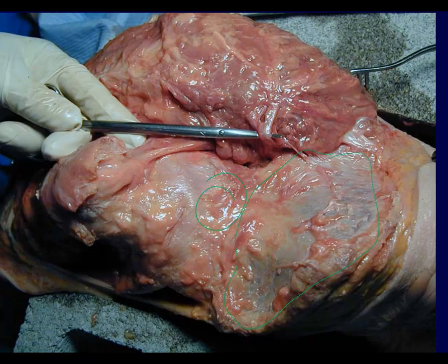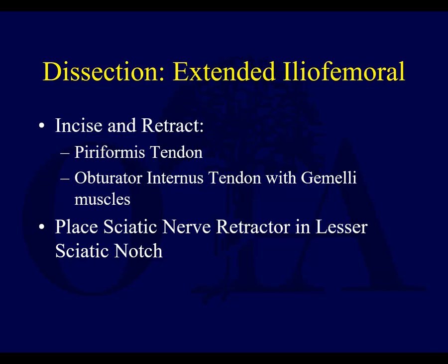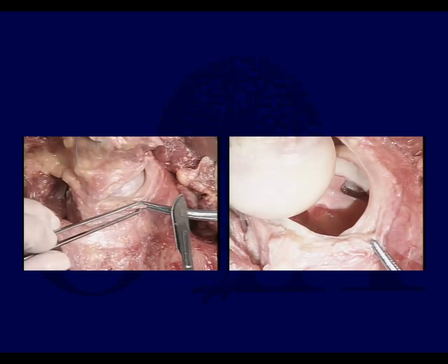You incise and retract the piriformis tendon and the obturator internus tendon with the gemelli muscles — it's almost like you're back doing a posterior approach, like a Kocher-Langenbeck. You put the sciatic nerve retractor in the lesser sciatic notch to protect the sciatic nerve. Do a capsulotomy if required — and I think if you're doing this approach, you want to see the joint. You retract the femur distally, apply traction, and you can see not only the fractures in the iliac wing but also the fracture in the joint itself. Here you can see the femoral head being distracted and the acetabular fossa visualized.